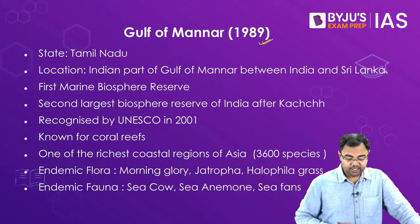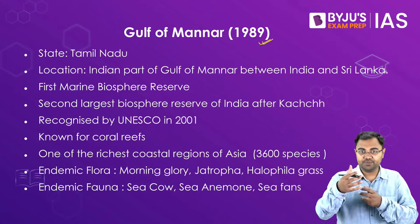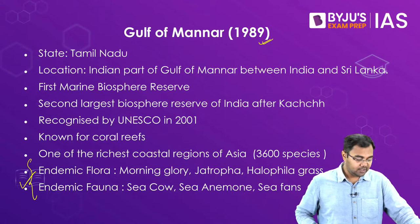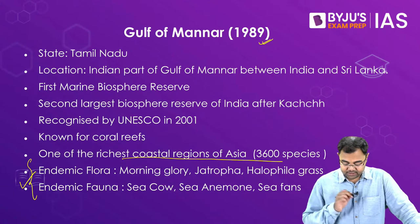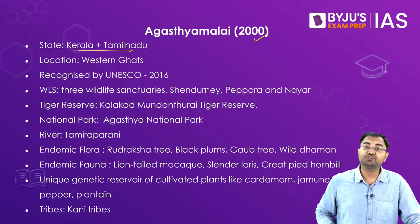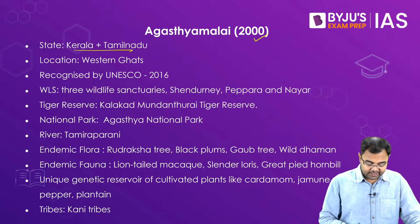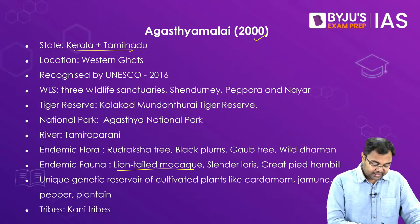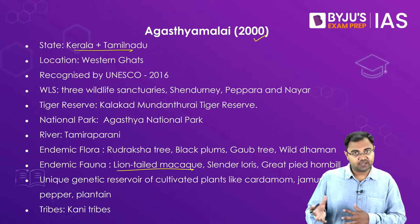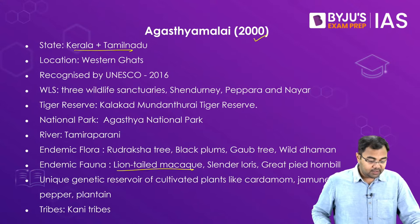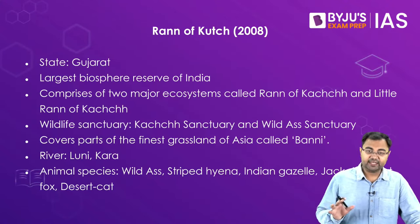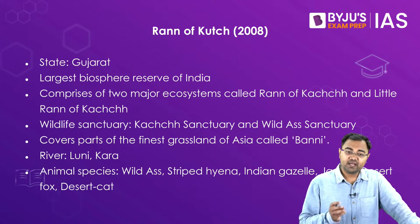Gulf of Mannar is the stretch between India and Sri Lanka. It has endemic flora and fauna and is considered one of the richest coastal regions of Asia. Agasthyamalai Biosphere Reserve is shared between Kerala and Tamil Nadu, where the lion-tailed macaque is found — making it an important conservation area. There are also plantations found in the surrounding areas. Rann of Kutch is a very unique wildlife stretch and is the largest Biosphere Reserve in India, with unique animal species not found elsewhere in the country.